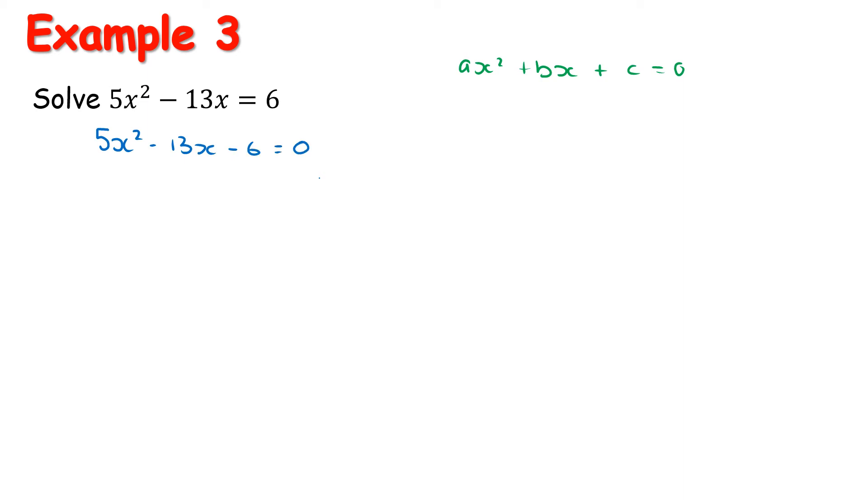Now, we can't use the shortcut for factorization in this question because there's a 5 in front of the x². That shortcut only works when that's a 1, where the leading coefficient is 1. So we're going to do the full guide number method here. So we have guide number of -30, and we want to get the factors that add to -13. So when we work that through, it will be -15 multiplied by a plus 2.